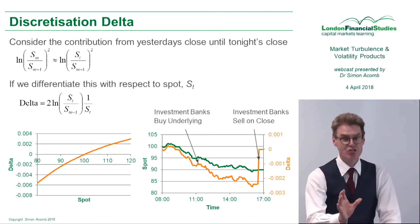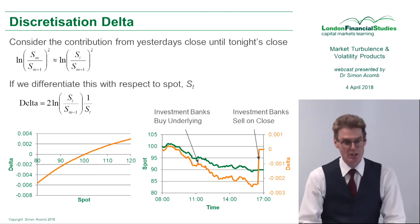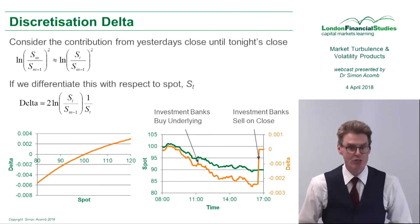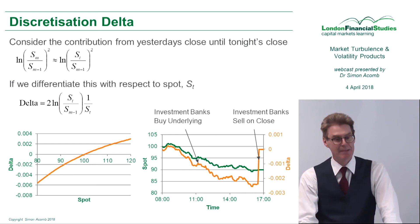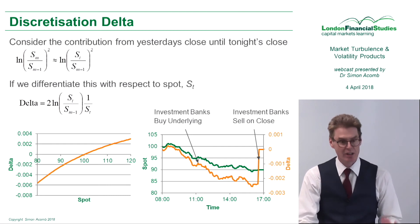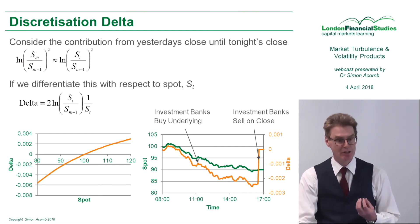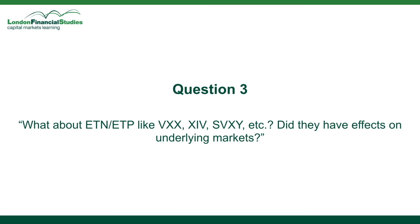This is showing an intraday behavior of an underlying. At the market open it starts off at 100, but it's been a bad day and it's going to close down 10%. As the market goes down slowly, the investment banks build up short delta on their variance swaps and have to buy little bits. Do they have effects on underlying markets?